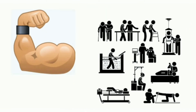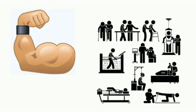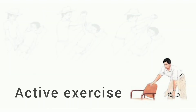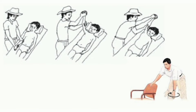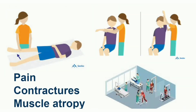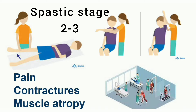Therapeutic exercises are used to maintain muscle function in unaffected areas and to restore muscle function in affected areas. There are two types: active exercise and passive exercise. Passive exercises are initially given to prevent muscle atrophy and to reduce pain and contractures. In the flaccid stage, passive exercises are given at least once a day; in the spastic stage, at least two to three times a day.